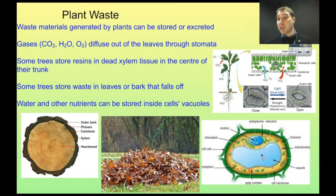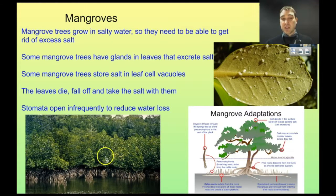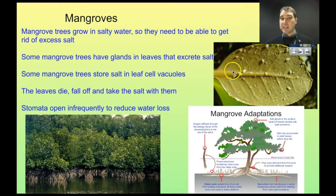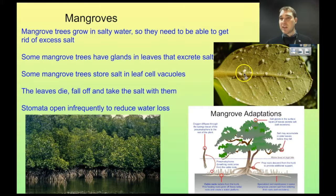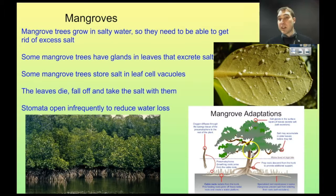We're going to look at a special case: mangroves. Mangroves are plants growing in a semi-salty area — there's fresh water on one end but salt water on the other end. They have to be able to tolerate salt, and this is a product they need to get rid of. Different mangrove plants deal with it in different ways. Some mangrove trees have glands in leaves that excrete salt — here we can see a mangrove tree leaf with salt crystals growing on it. The salt can be toxic if it builds up to too high a concentration inside the plant. Some mangrove trees store salt in leaf cell vacuoles, and as the leaves die and fall off, they take the salt with them. Another way is to reduce the amount of water the plant loses by opening the stomata infrequently — only when really necessary to allow gases in and out. If stomata stayed open all the time, too much water loss would occur, and the plant would die due to the build-up of salt.